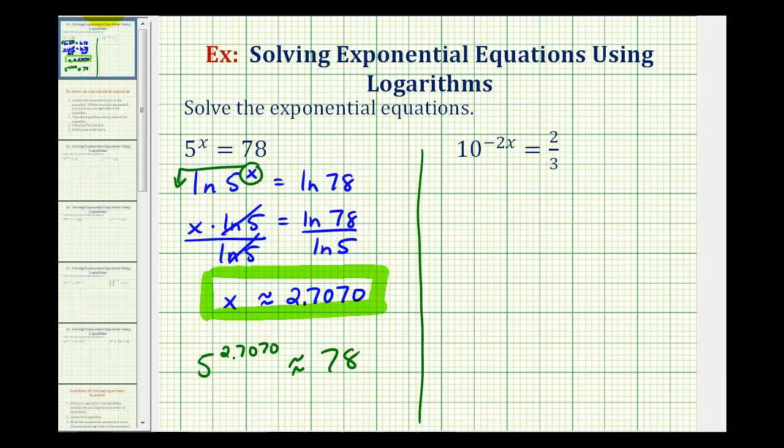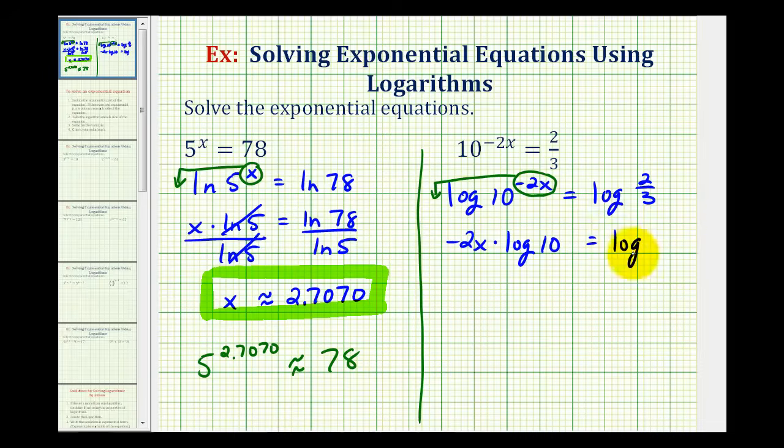And because here we have base 10, I'm going to take the common log of both sides. So we'll have the log of 10 raised to the power of negative 2x equals log 2 thirds. And now we can apply the power property of logarithms to move this exponent of negative 2x to the front. So we'd have negative 2x times log 10 equals log 2 thirds.